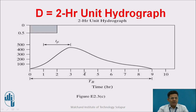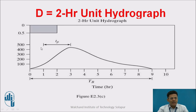The ordinates represent discharges produced by rainfall in a particular stream. At time 1 hour this is the ordinate, at time 2 hours this is the ordinate, and the peak time is at 3 hours where the stream flow is about 450 cubic meters per second and so on. This particular 2-hour unit hydrograph will be used further.